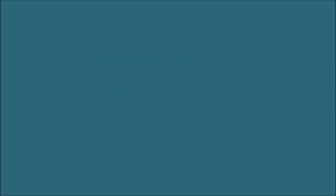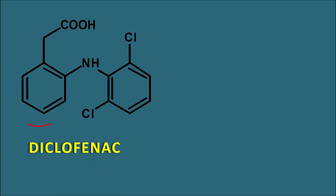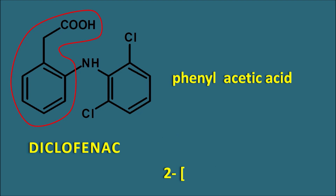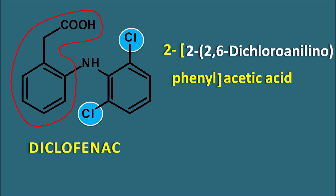Next let us see the aryl acetic acid derivatives. The well-known drug diclofenac has a phenyl group attached with an acetic acid. The phenyl group is present at the second position of the acetic acid, so we write 2-phenyl acetic acid. To this phenyl ring an amine group is attached along with another phenyl group — a phenyl group with amine can be called anilino. Here it is an anilino group at the second position, further substituted with chlorine at the second and sixth positions. So 2-(2,6-dichloroanilino)phenyl acetic acid is diclofenac.